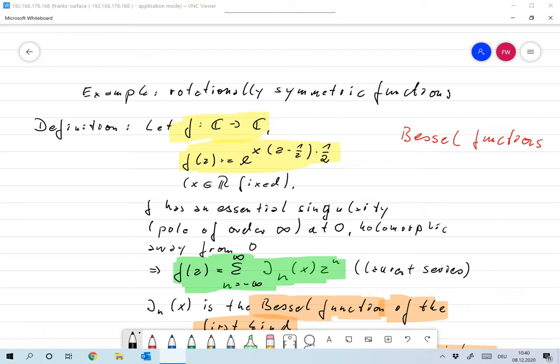Assume f is a function from C to C, and define the complex function by f(z) = e^(x(z - 1/z) · 1/2), where x is usually in R, fixed. Defining this, there's a 1/z up there, so we have something like e^(1/z). So definitely f has an essential singularity at 0, a pole of order infinity. But everywhere else it's just holomorphic, differentiable, everything.